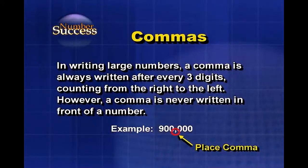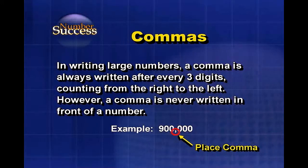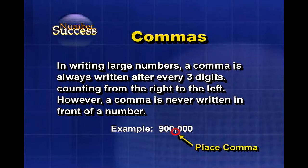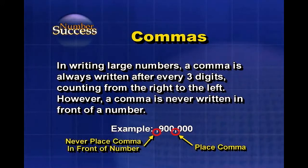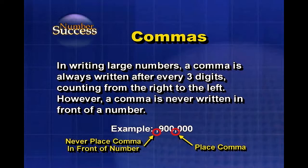In writing large numbers, a comma is always written after every three digits, counting from the right to the left. However, a comma is never written in front of a number — for example, nine hundred thousand has no comma needed in front of the nine.